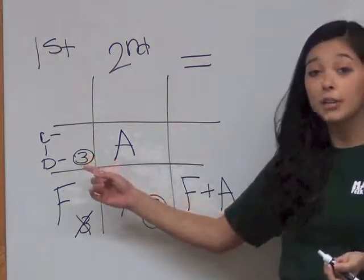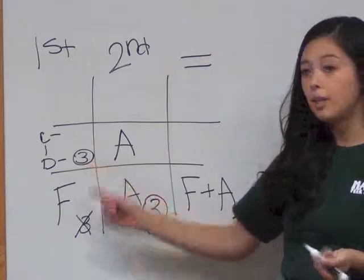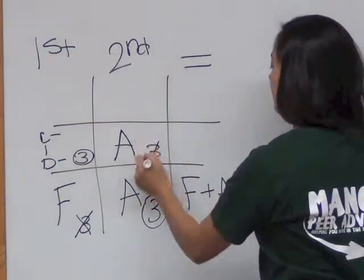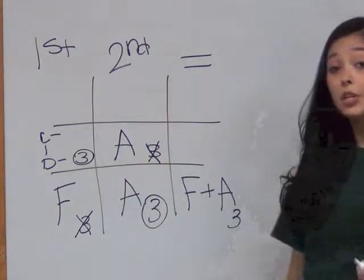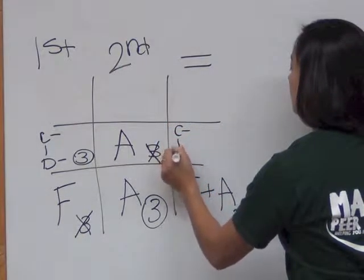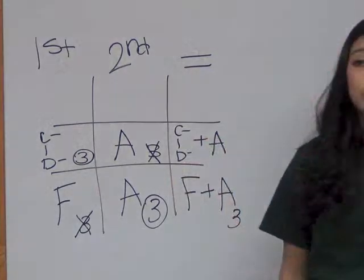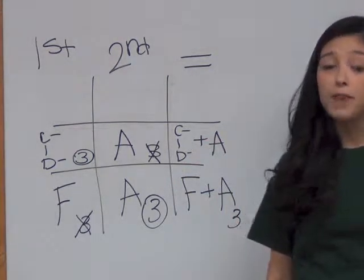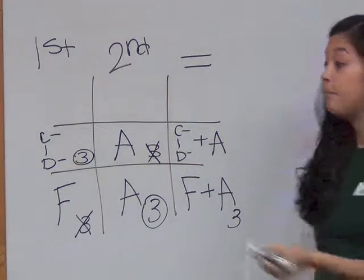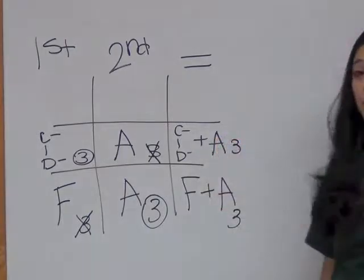Now since they are receiving credit the first time they took it, they won't receive credit the second time. On their transcript, both the C- to D- and the A will show up, and both will be factored in their UH Manoa GPA. They will also receive their three credits.